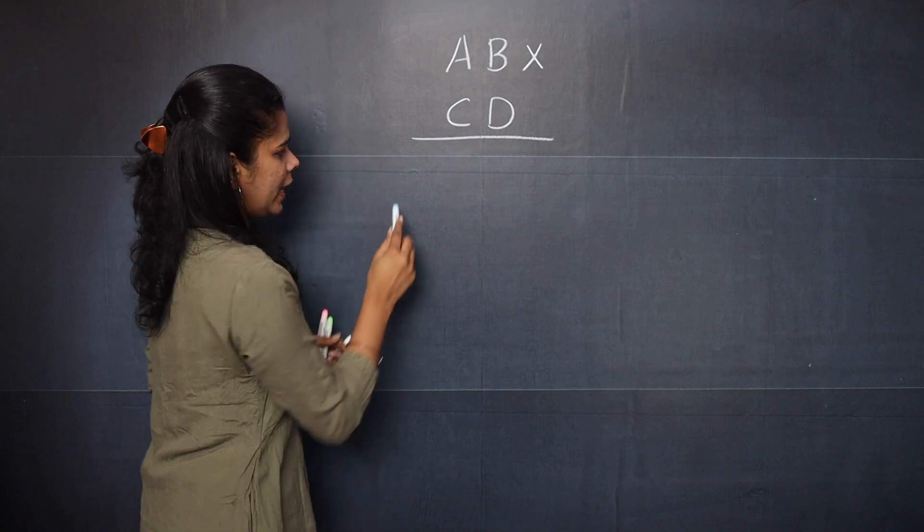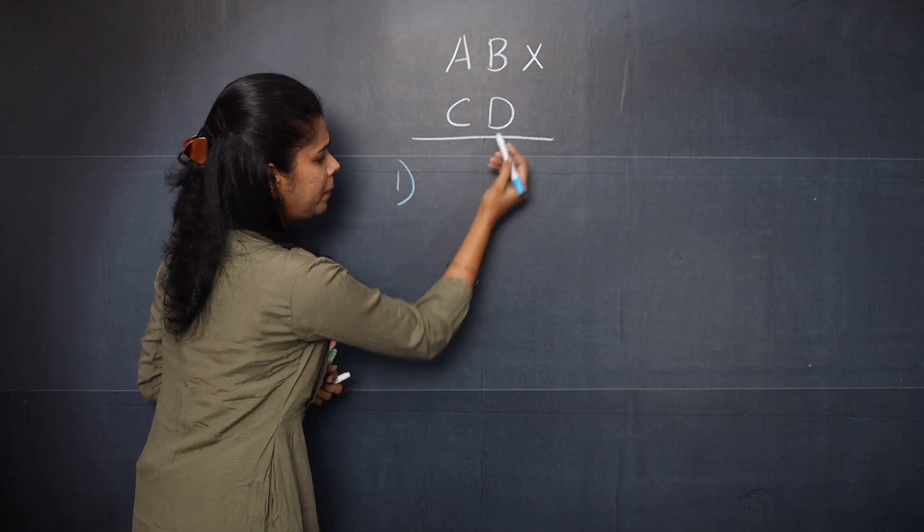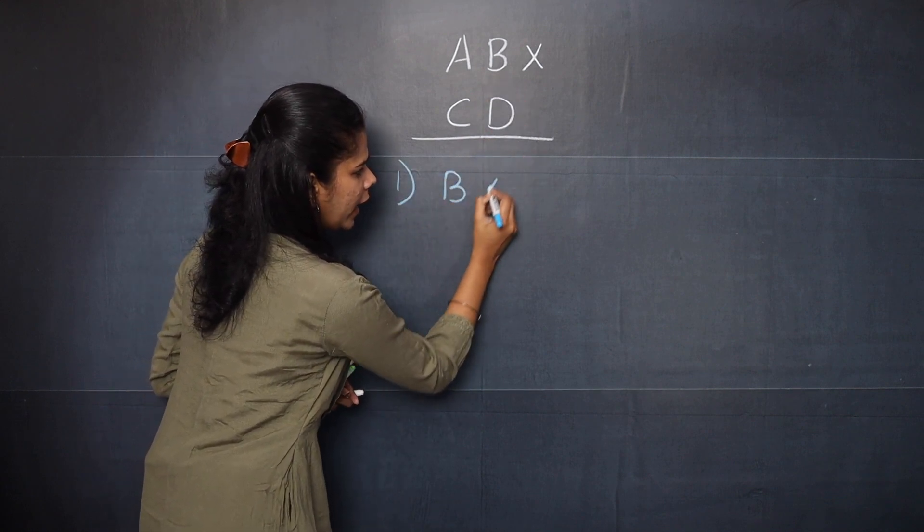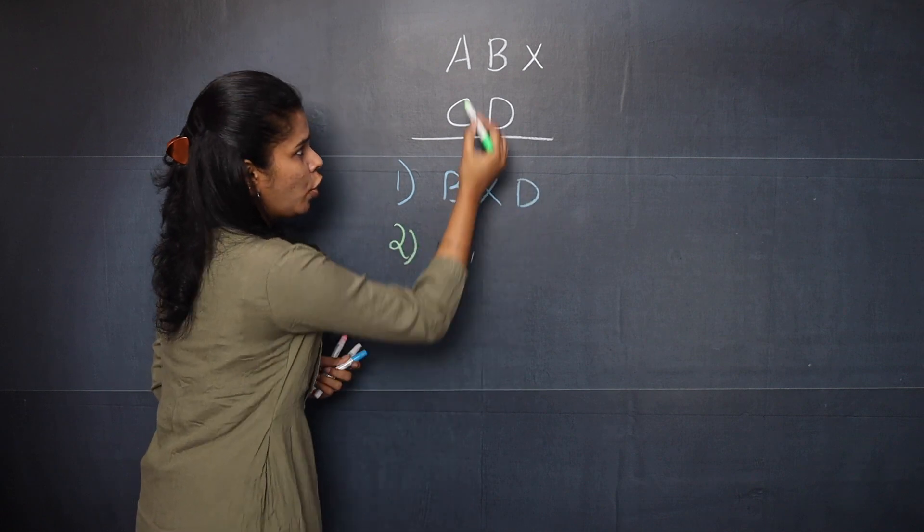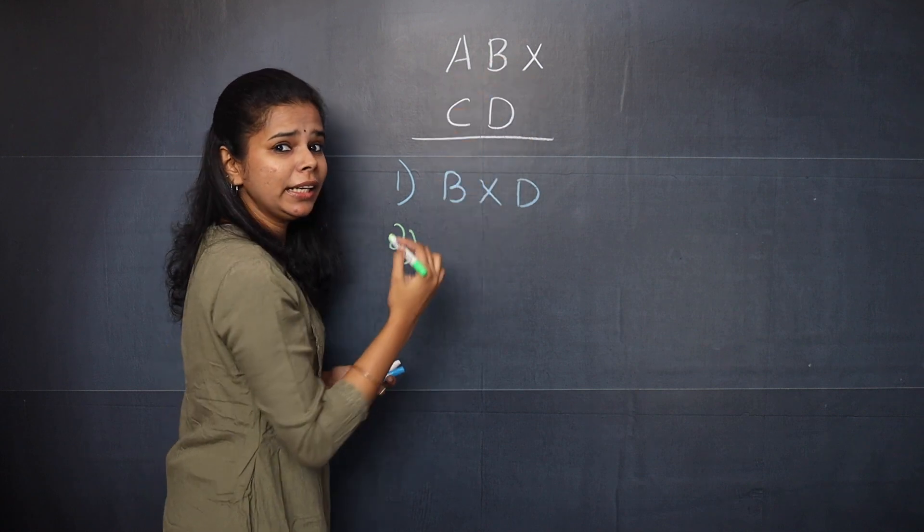So the first step is that you need to multiply B and D. The second step is that you need to cross multiply and add it.